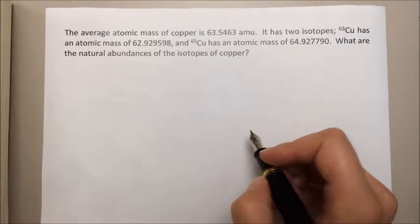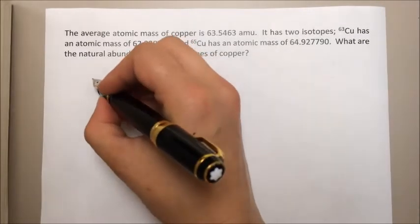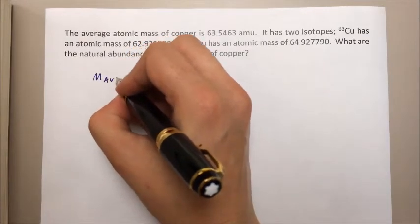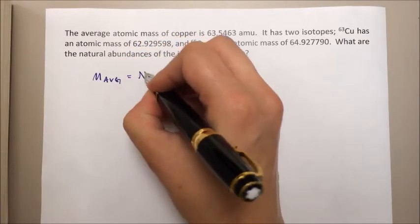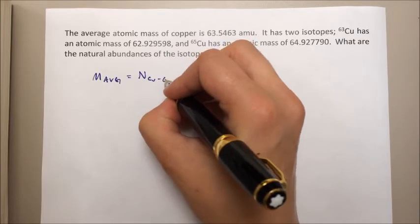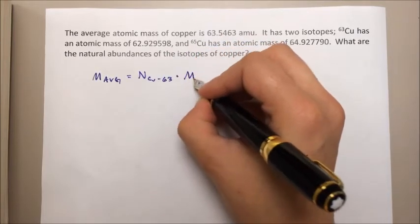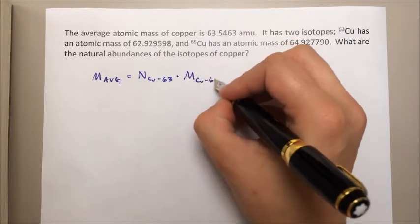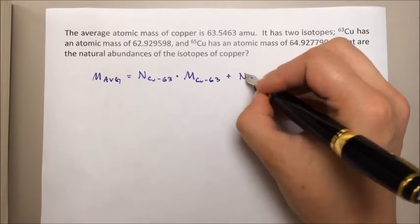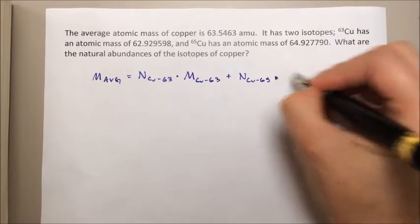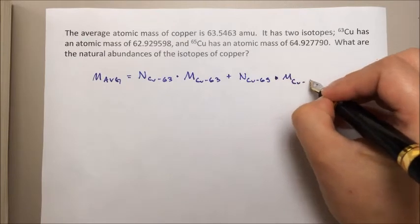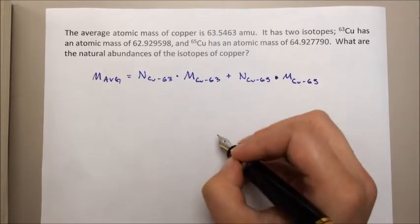First is the average atomic mass equals the natural abundance of copper 63 times the mass of copper 63 plus the natural abundance of copper 65 times the mass of copper 65.